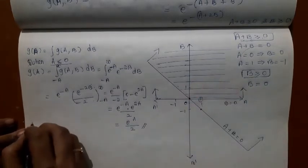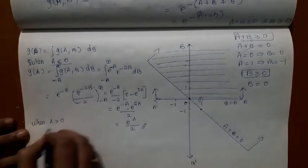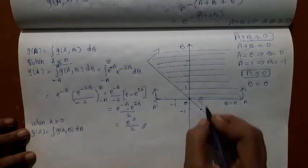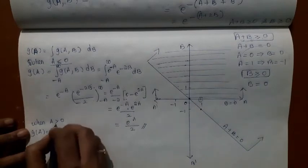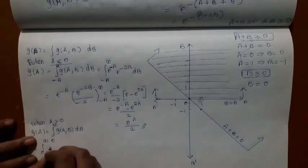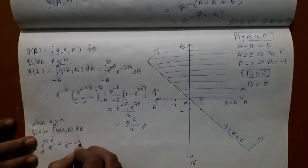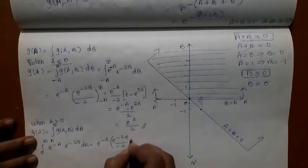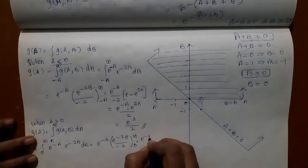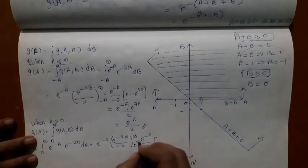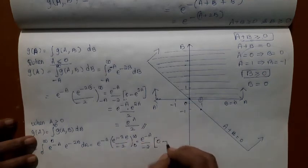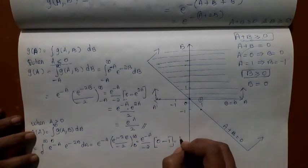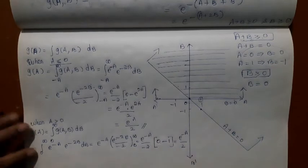For A > 0: G(a) = ∫ from 0 to ∞ of e^(−a) · e^(−2b) db. Taking e^(−a) outside and integrating, we get e^(−a)/(−2). Substituting limits: the upper limit gives 0, and substituting b = 0 gives 1. So G(a) = e^(−a) / 2 when A > 0.